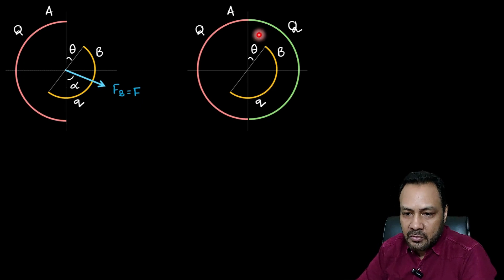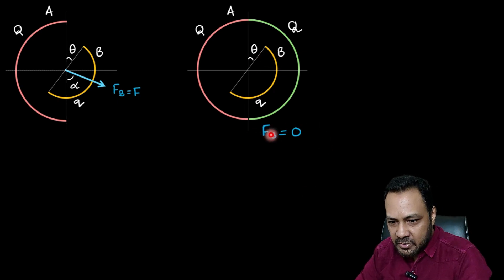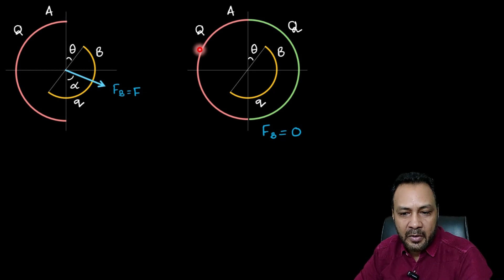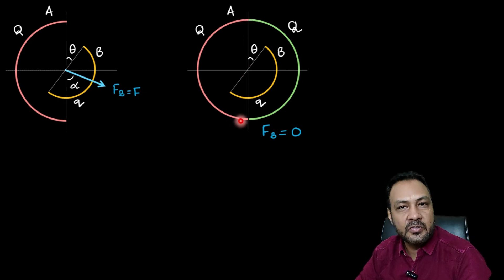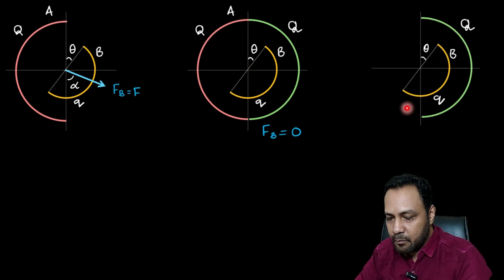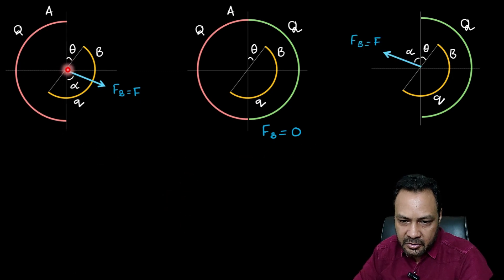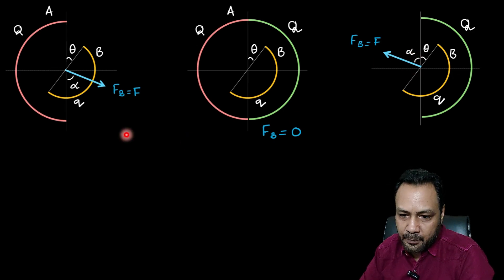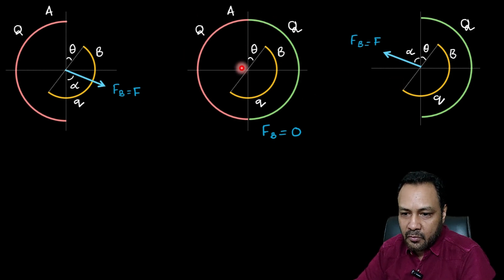So the net force on B due to the whole uniform shell is zero — meaning F_B = 0. This zero is the sum of the force due to part A and the force due to the mirror image of part A. Since the force due to A is in some direction at angle alpha, the force due to the mirror image part must be equal and opposite — same magnitude F, but in the opposite direction.